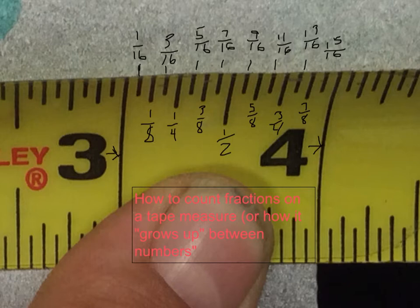Then we have 5 sixteenths, 3 eighths, 7 sixteenths, and then 1 half. 1 half is the same as 4 eighths and 8 sixteenths. And then 9 sixteenths, 5 eighths, which is the same as 10 sixteenths, 11 sixteenths, and then 3 fourths, which is the same as 12 sixteenths and 6 eighths, 13 sixteenths, 7 eighths, 15 sixteenths, and the whole number 4.